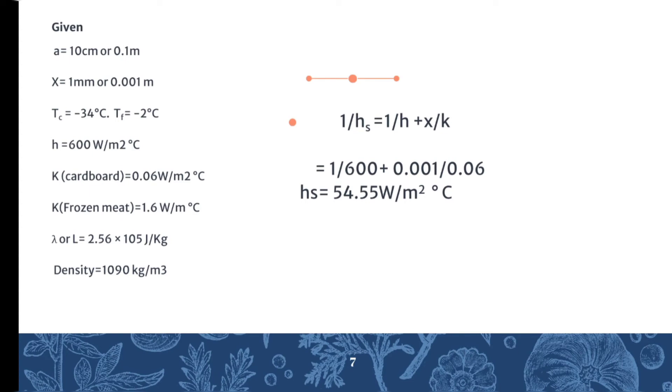Given: a = 10 cm or 0.1 m, x = 1 mm or 0.001 m. This is a case of packaging material, so we have to find the overall heat transfer coefficient represented as hs. The formula we discussed earlier is 1/hs = 1/h + x/k.